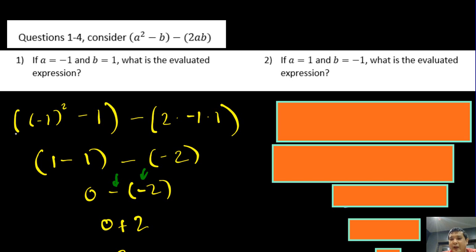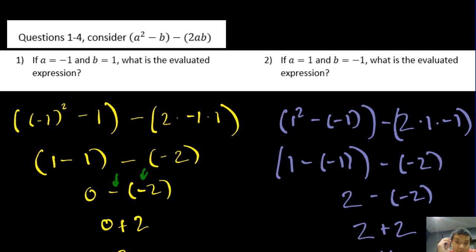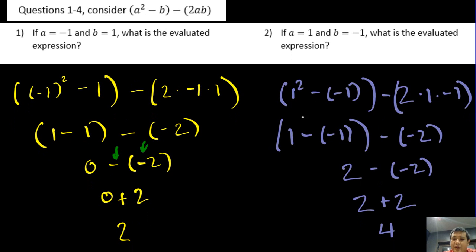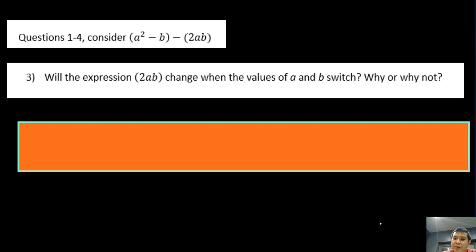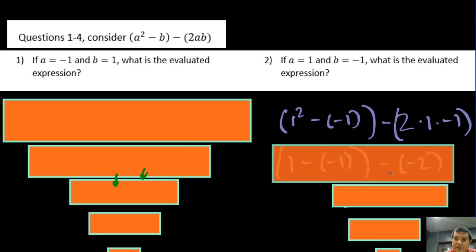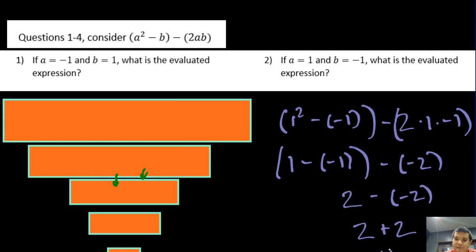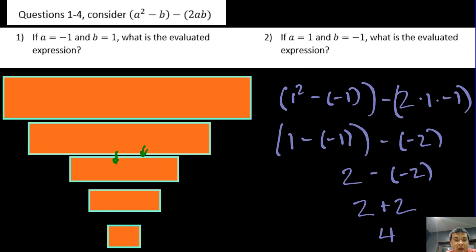Part 2 says if a equals 1 and b equals negative 1 — they're flipping the values — what is the evaluated expression? What you should have found is that the final answer is 4, because 1 squared is still 1, 2ab gives us negative 2, and 1 minus negative 1 is 2; 2 minus negative 2 is the same as 2 plus 2, which gives us 4.